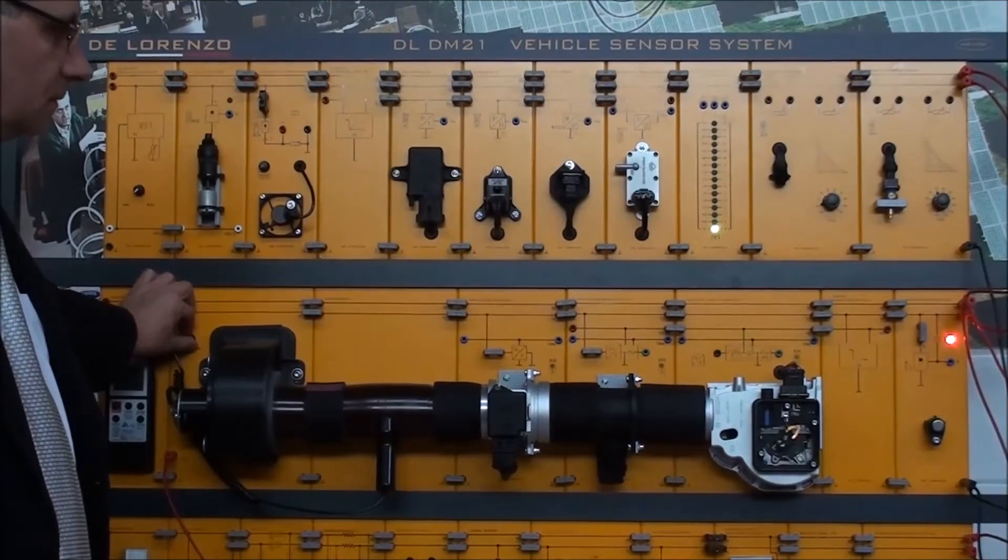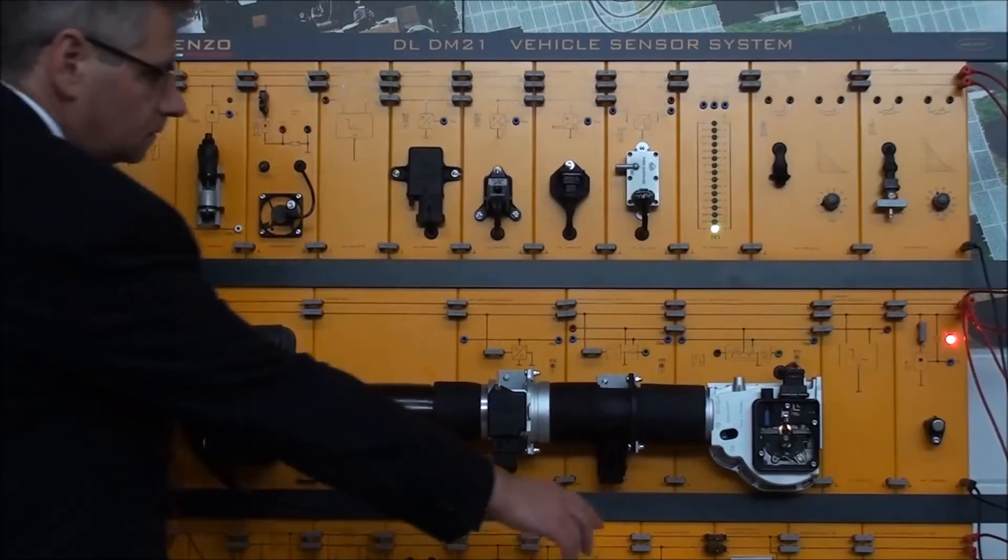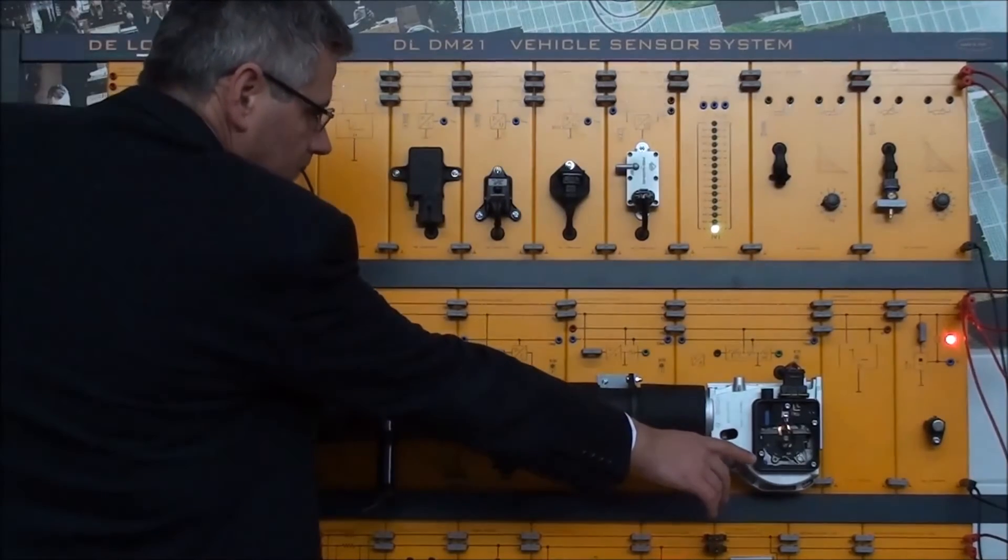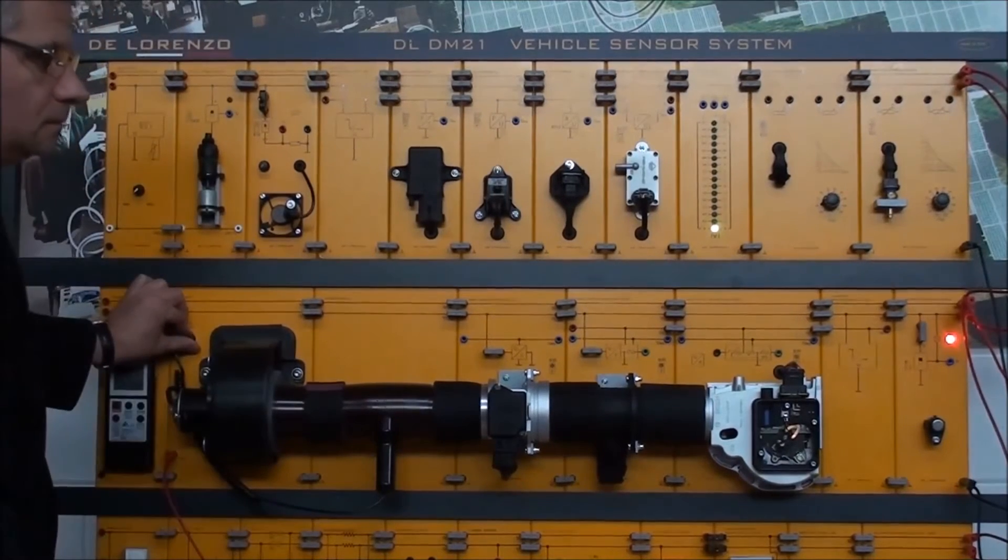You can also experience the operation of the volumetric air flow meter sensor. By modifying the volume of the air that passes through the sensor, it is possible to visualize the moving coil in action.